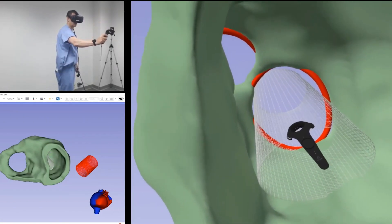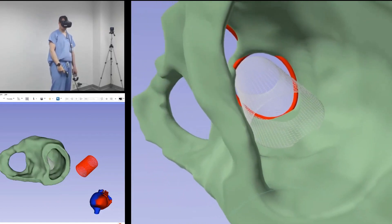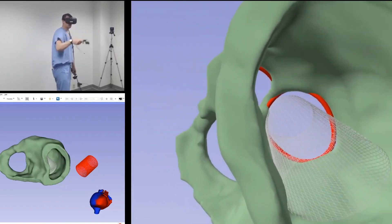We then angle the device towards the posterior medial papillary muscle and note the increased area in LVOT.